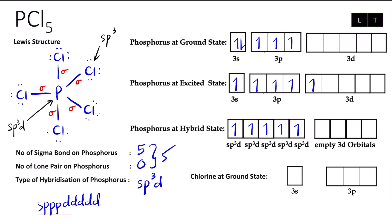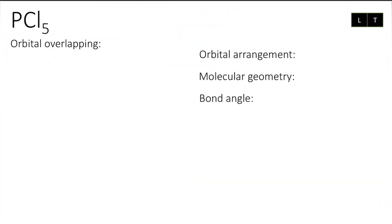That's settled for the hybridization process for phosphorus, our central atom. Now we go for chlorine. Chlorine at ground state — it's the terminal atom — we have seven electrons in period three: one, two, three, four, five, six, seven.